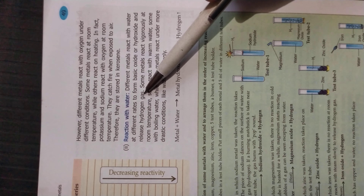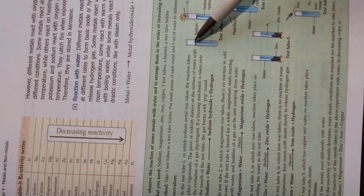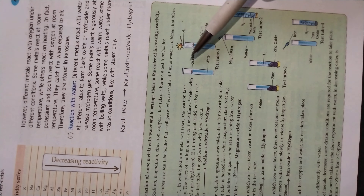Different metals react with different elements at different temperatures. In Activity 3, in the first example, a test tube is filled with water and pieces of sodium are added. Sodium reacts with water and forms sodium hydroxide, and hydrogen gas is produced. When a burning matchstick is held near the mouth of the test tube, the gas burns with a pop sound — confirming the gas is hydrogen.